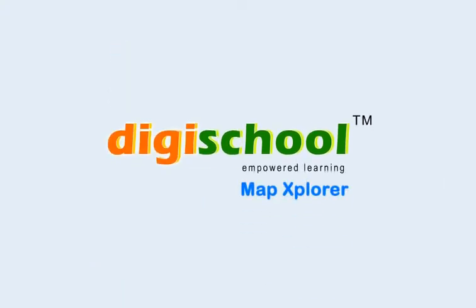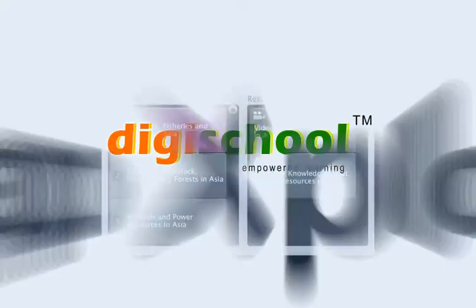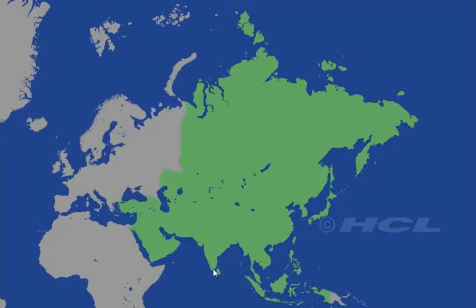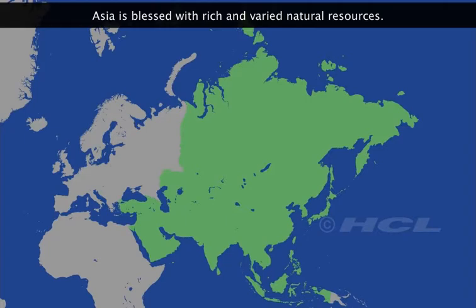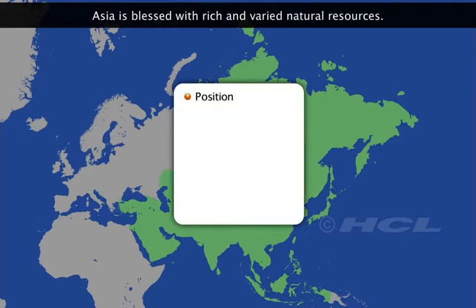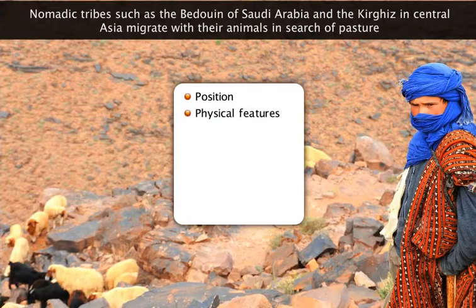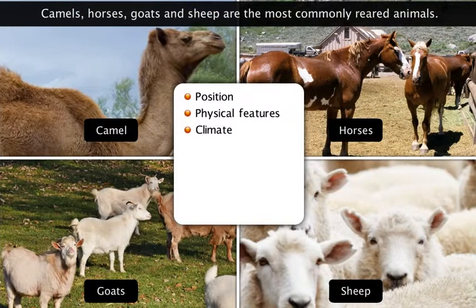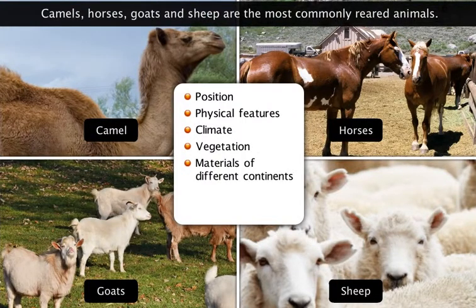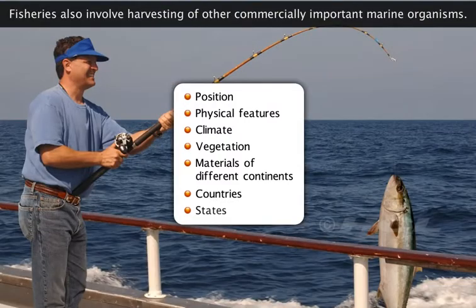Map Explorer. Maps are the most effective teaching aid for geography. They are needed to adequately explain the position, physical features, climate, vegetation and materials of different continents, countries and states.